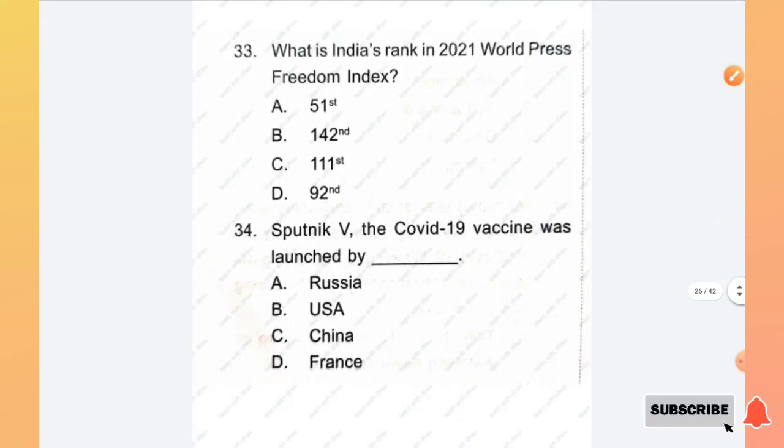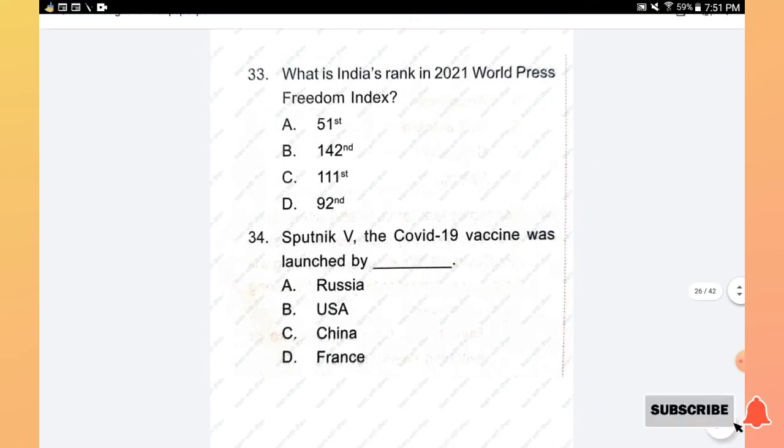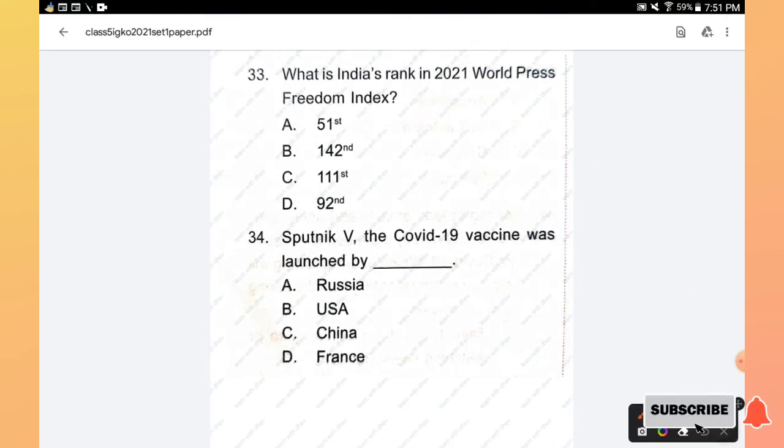Question number 33: What is India's rank in 2021 World Press Freedom Index? 51st, 142nd, 111st, and 92nd. The right answer is option B, 142nd.